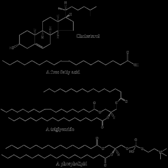Other examples of sterols are the bile acids and their conjugates, which in mammals are oxidized derivatives of cholesterol and are synthesized in the liver. The plant equivalents are the phytosterols, such as beta-sitosterol, stigmasterol, and brassicasterol. The latter compound is also used as a biomarker for algal growth. The predominant sterol in fungal cell membranes is ergosterol.